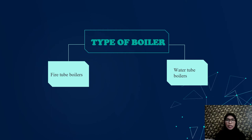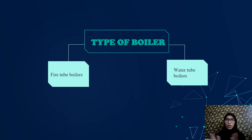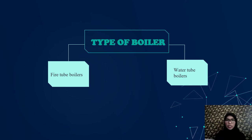There are two primary types of boiler: fire tube boiler and water tube boiler. In a fire tube boiler, hot gases of combustion flow through a series of tubes surrounded by water. For a water tube boiler, water flows inside the tubes and the hot gases from combustion flow around the outside of the tubes.